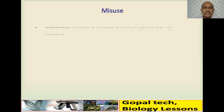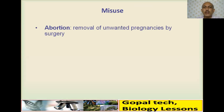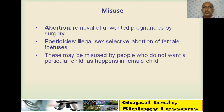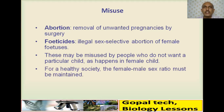Some people misuse certain methods through abortion — the removal of unwanted pregnancies by surgery. This happens more with female fetuses, which is called feticide: illegal sex-selective abortion of a female fetus. The government has started the 'Beti Bachao, Beti Padhao' program. For a healthy society, the male-to-female sex ratio must be maintained. Prenatal sex determination is strictly prohibited by law.